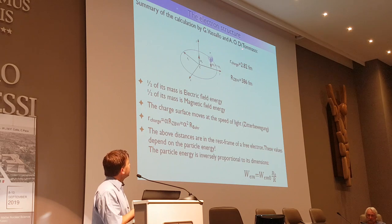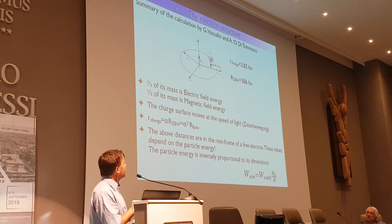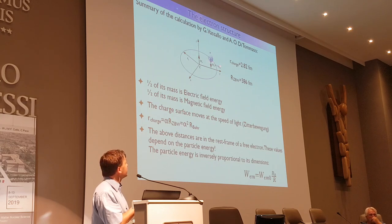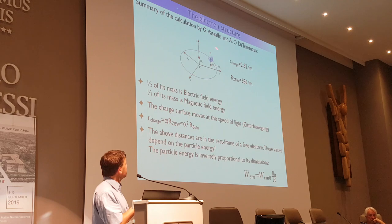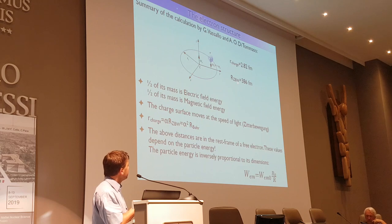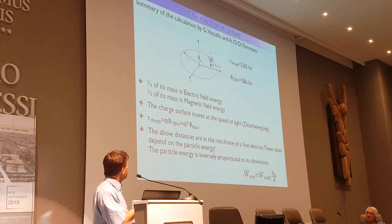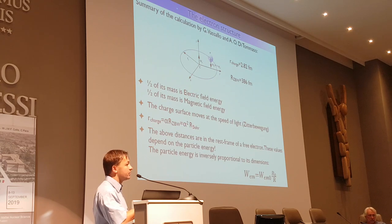Based on these principles, Giorgio Vassalo and Di Tommaso calculated the electron structure. The electron model has a spherical charge surface with a radius equal to the classical electron radius, with a Zitterbewegung motion at the speed of light. The radius at which it moves is the Zitterbewegung radius — the reduced Compton wavelength. You can recognize a geometric scaling between the charge radius, Zitterbewegung radius, and the Bohr radius, with the geometric scaling factor alpha being the electromagnetic fine structure constant.